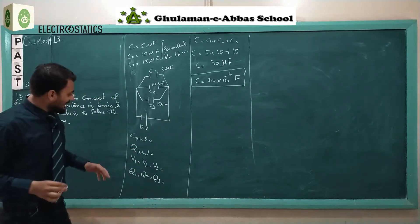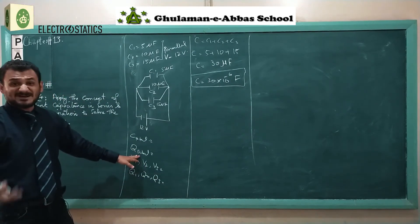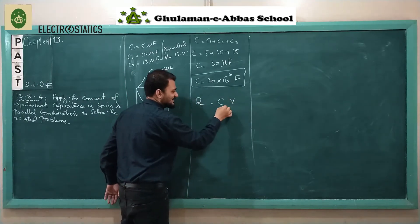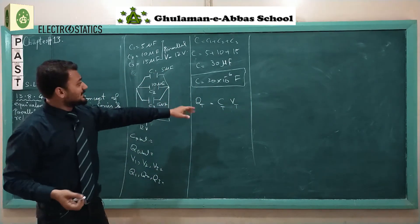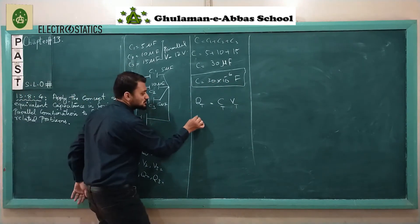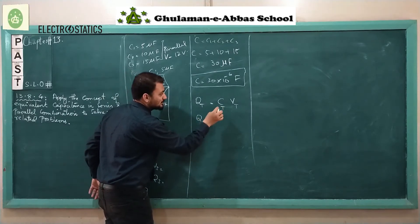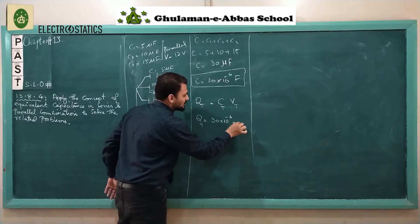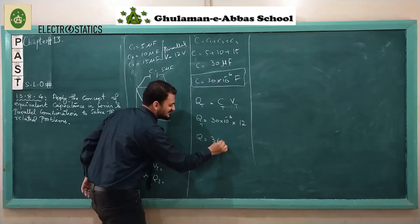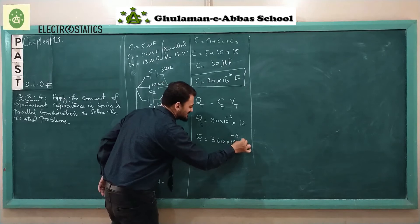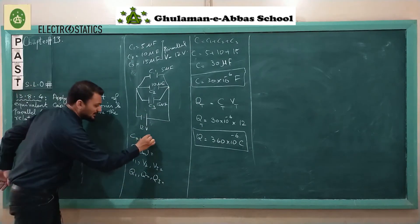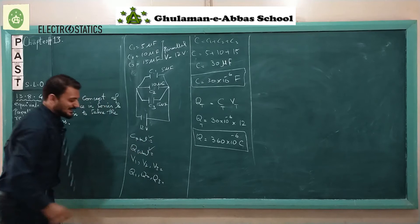Now we have the total capacitance. The total voltage is given as 12 volts, so let's calculate the total charge. Total charge Q = CV, where C is the total capacitance and V is the total voltage. So Q = 30 × 10⁻⁶ × 12 = 360 × 10⁻⁶ coulombs. The SI unit of charge is coulombs. Total capacitance and total charge are now calculated.